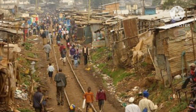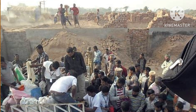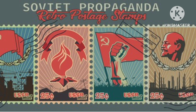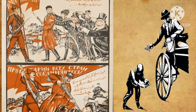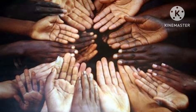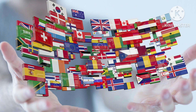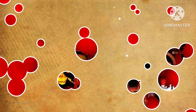Communism eliminates poverty, hunger, and homelessness. It aims to create a society where everyone owns everything in common and works for the common good. There is no private property, money, or markets, which means there is no exploitation, greed, or scarcity. It fosters a sense of community and solidarity among people. Communism supports the emancipation of women and the ending of their exploitation. It also promotes international cooperation and peace, as opposed to nationalism and war.